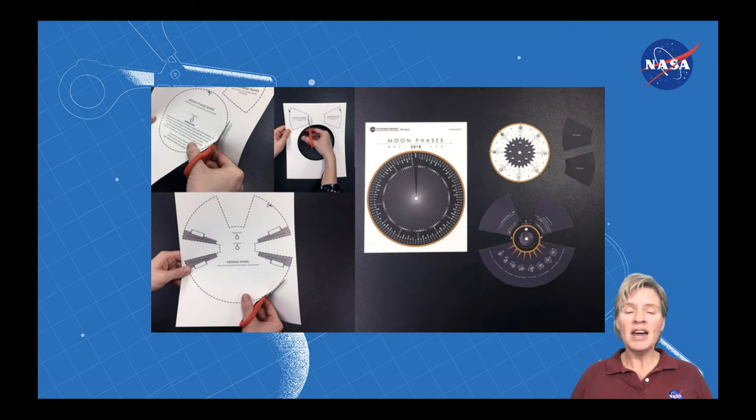Next, you're going to cut out a few things. Follow the little scissors icons and cut out the items shown.